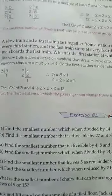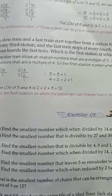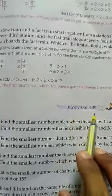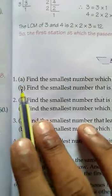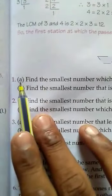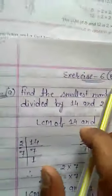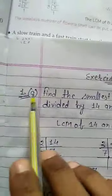Now class 5th students, we will do exercise 6th E. Exercise 6E has questions 1 to 6 and we will do question 1. Question 1 has 2 parts, part A and part B. So first of all we will do part A. Take out your math register and write the heading Exercise 6th E and Question 1 A.